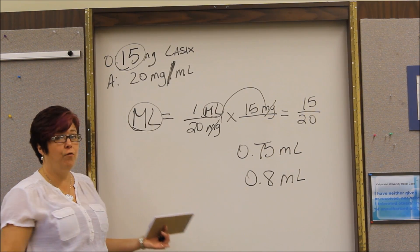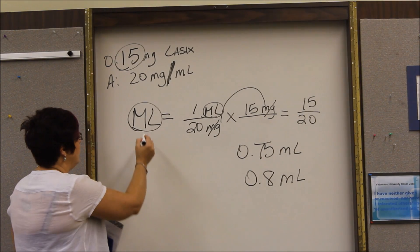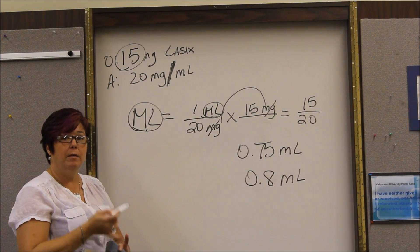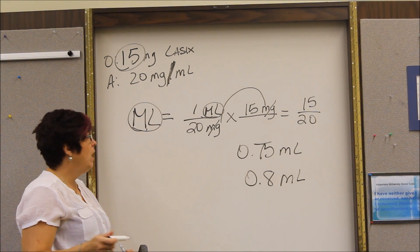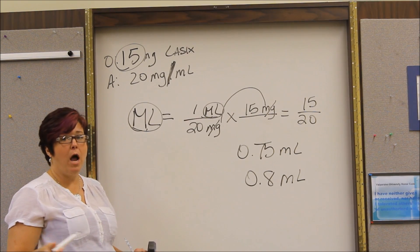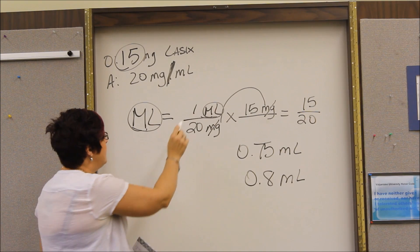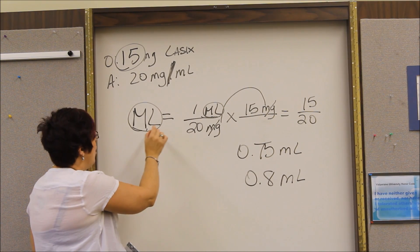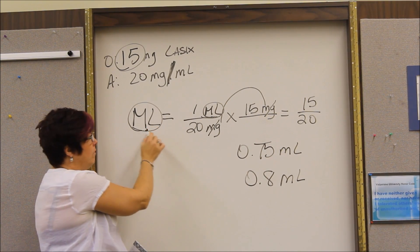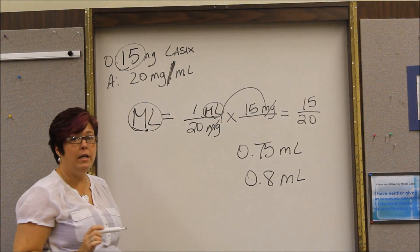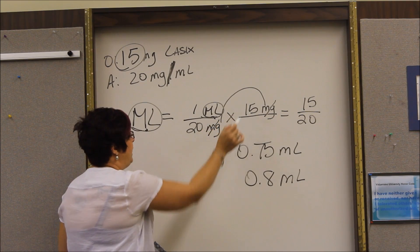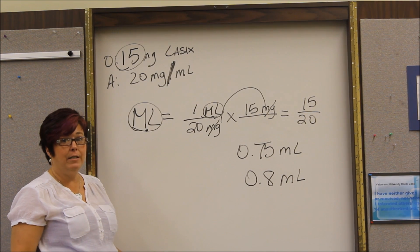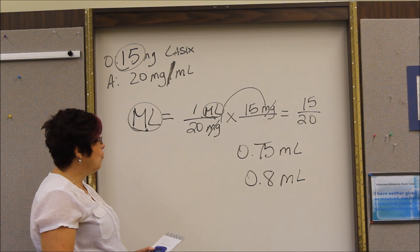That is the basic formula. The important thing to remember is first you have to know what your answer, the unit of measurement your answer needs to be. Is it milliliters or tablets or capsules or if it's an IV, milliliters per hour. The other important thing that sets up the whole formula is this. Whatever unit of measurement you have here, that is what you have to start with here. And then you bring in the important information from your problem. And if you just follow that, you basically can't go wrong. So let's try a different problem.